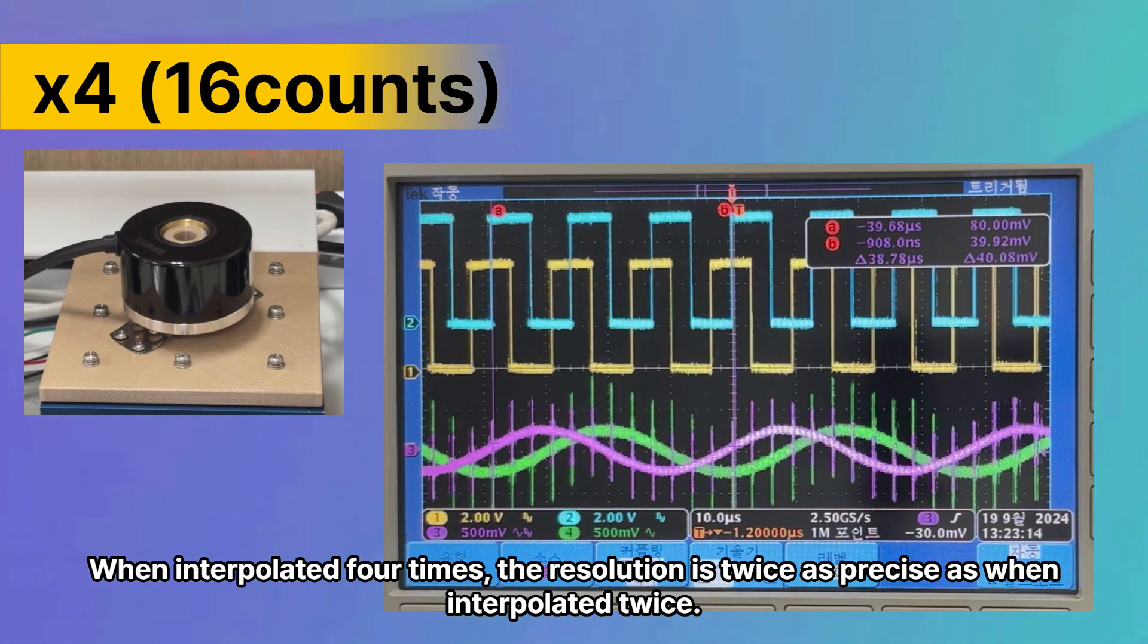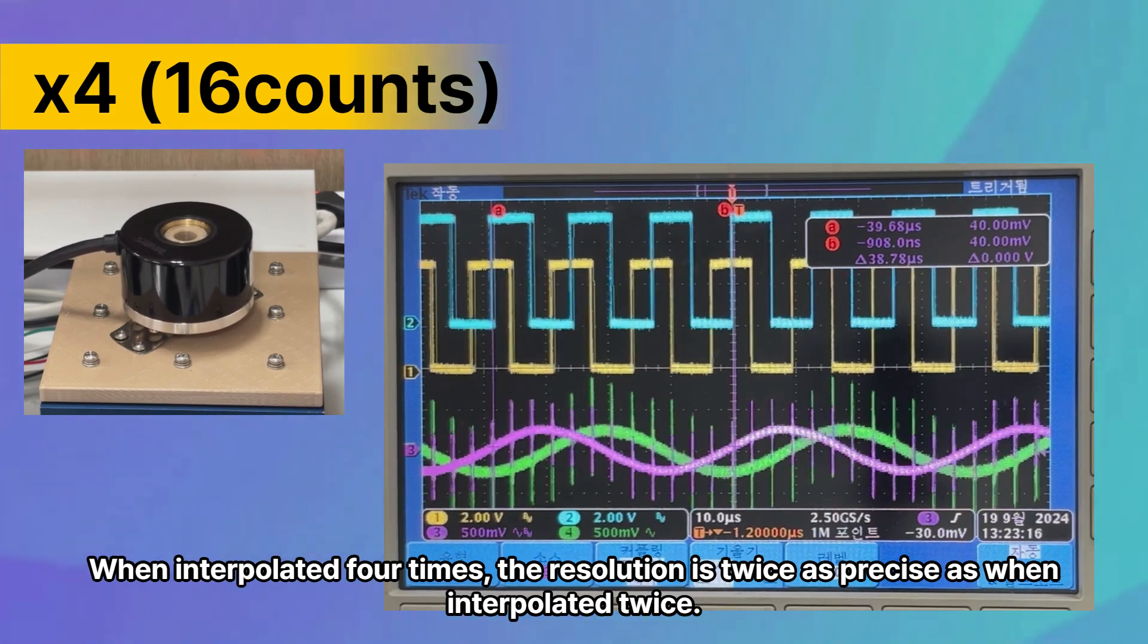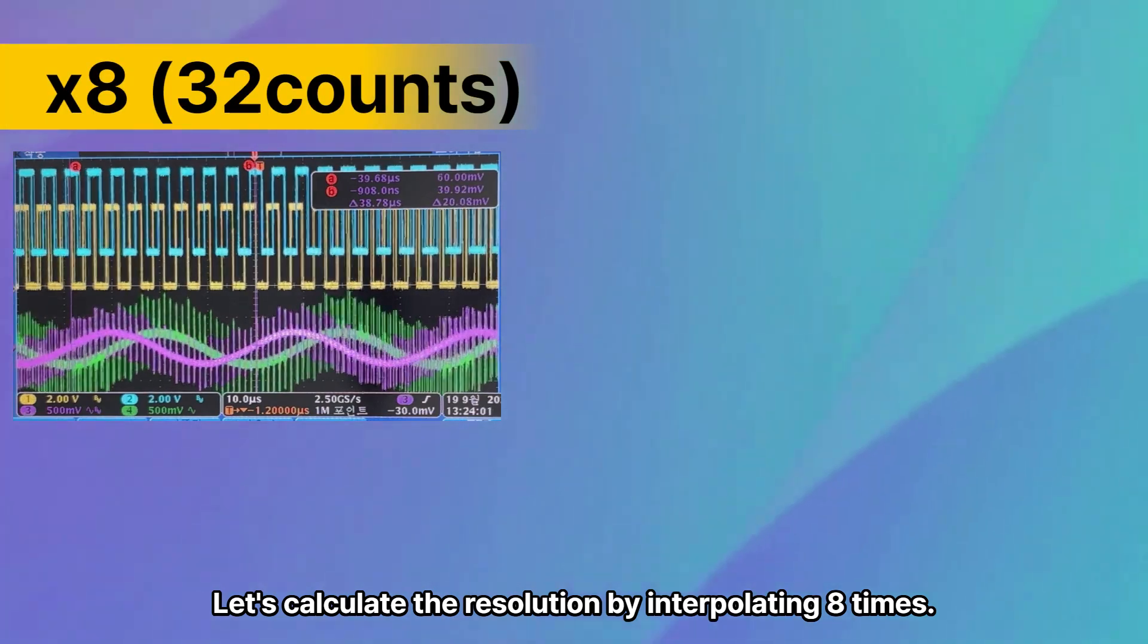When interpolated four times, the resolution is twice as precise as when interpolated twice. Let's calculate the resolution by interpolating eight times.